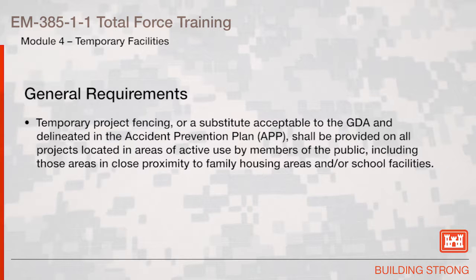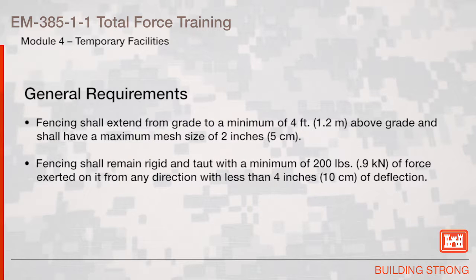Temporary project fencing, or a substitute acceptable to the GDA and delineated in the accident prevention plan, shall be provided on all projects located in areas of active use by members of the public, including those areas in close proximity to family housing areas and/or school facilities. Fencing shall extend from grade to a minimum of four feet above grade and shall have a maximum mesh size of two inches. Fencing shall remain rigid and taut with a minimum of 200 pounds of force exerted on it from any direction with less than four inches of deflection.